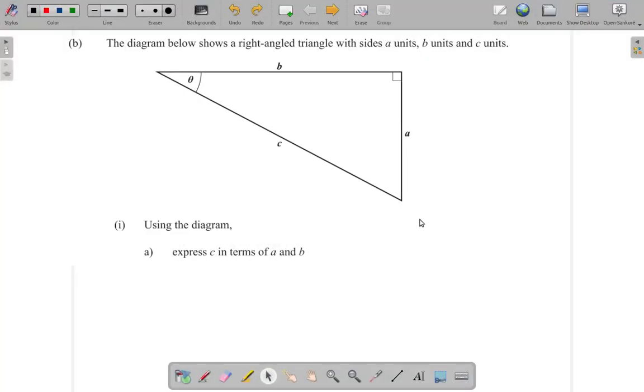This is part B of this question. It says the diagram below shows a right-angled triangle with sides A units, B units, and C units.